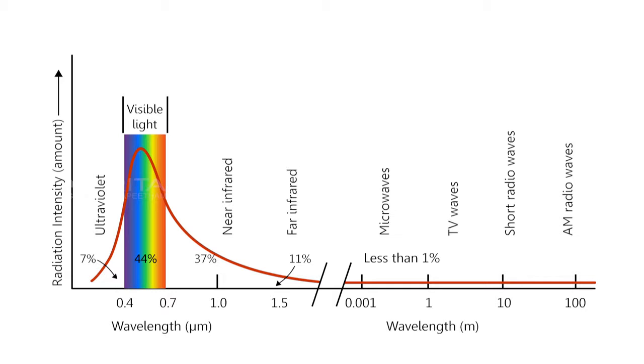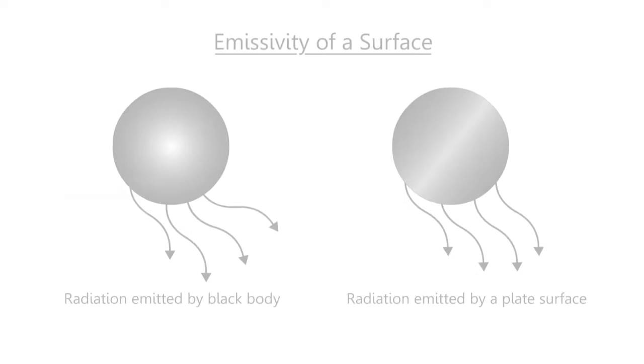That is, a black body is a diffuse emitter. Emissivity of a surface is defined as the ratio of the radiation emitted by the surface to the radiation emitted by the black body at the same temperature.